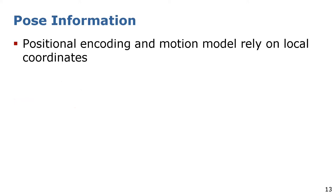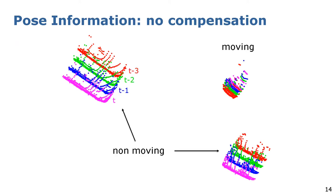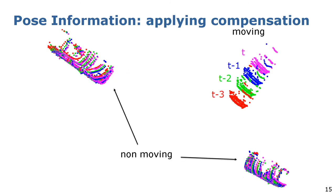Both the positional encoding and the motion model rely on point coordinates, so if we use only local coordinates, instance positions are not consistent over time due to ego-motion. For example, in a sequence of LiDAR scans, static parked cars appear to move sideways while a moving object traveling at the same speed as the vehicle appears static. By incorporating sensor pose estimates from a SLAM approach, static objects remain static and moving objects are correctly observed as moving. We apply this correction to get consistent poses and recompute features for all previously tracked instances by updating the positional encoding.